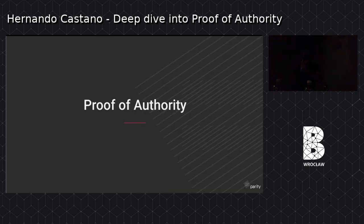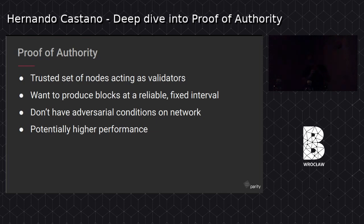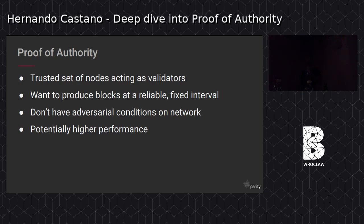But our focus tonight is proof of authority. In proof of authority, we've got a trusted set of nodes. This addresses challenges like malicious nodes because you know who the validators are and you can trust them. It also allows you to produce blocks at a reliable and constant pace — unlike proof of work where hash power is unpredictable. This can also bring higher performance depending on your setup and network conditions.